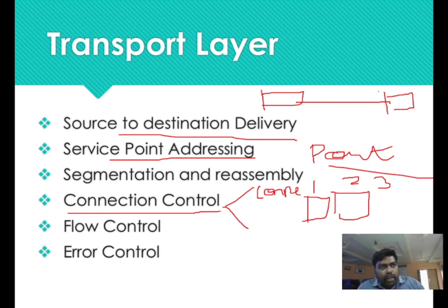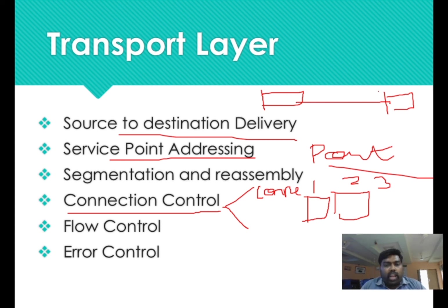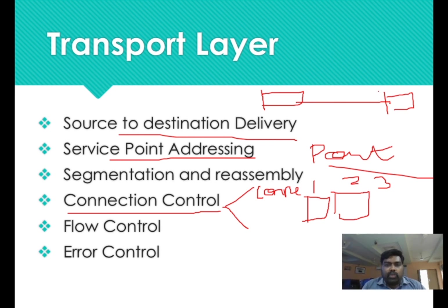Connection-oriented establishes a connection and then performs data transfer. You know what is connectionless and you know what is flow control and error control. What do you do with flow control and error control in the data link layer? Flow control ensures data reaches the destination correctly. So this is the working of the transport layer.